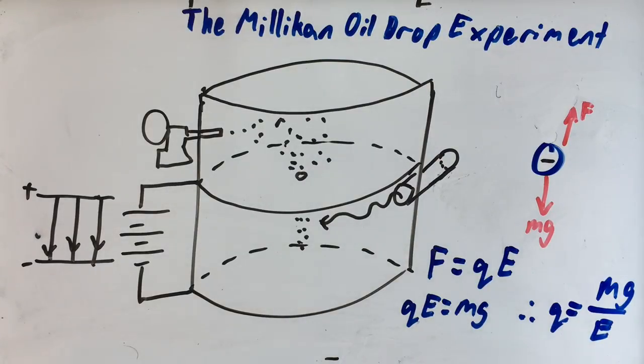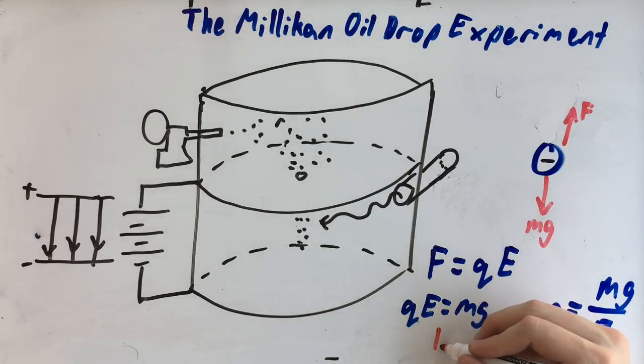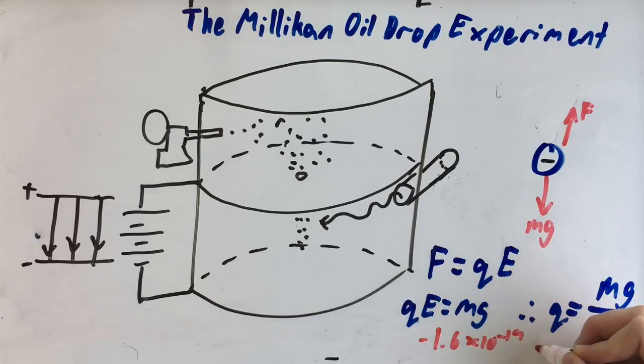But that charge is not the charge of an electron because they have attached many, many electrons. So when you repeat the experiment, you find out that the value of Q is always a multiple of minus 1.6 times 10 to minus 19 coulombs, which is the value of the charge of an electron.